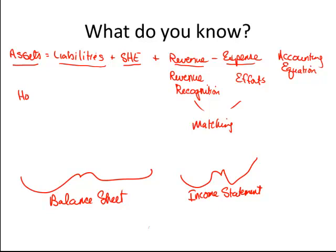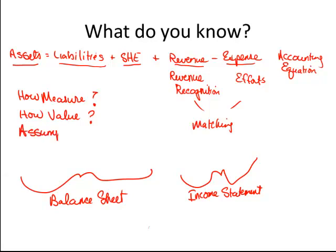How to measure these assets, liabilities, shareholders' equity, revenue, and expense, and how to value them. In addition, we're going to look at some of the underlying assumptions behind the accounting equation and the financial statements — the balance sheet and income statement. Those assumptions include things like going concern and stable dollar.